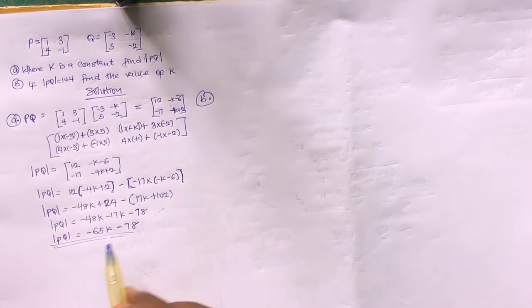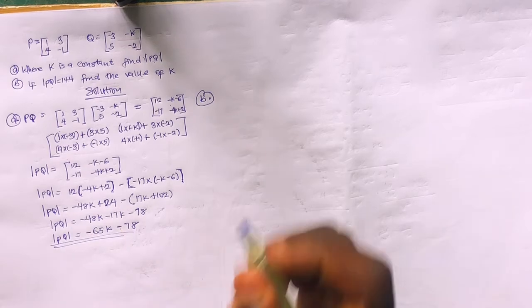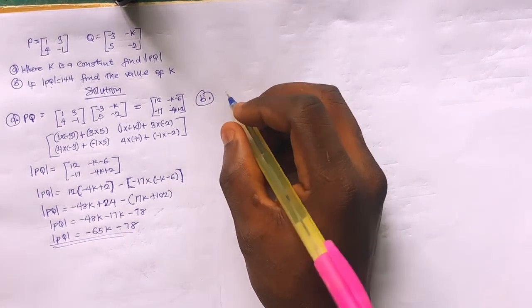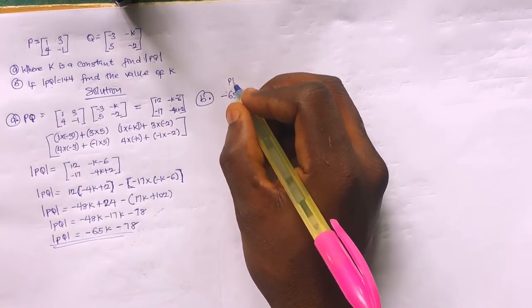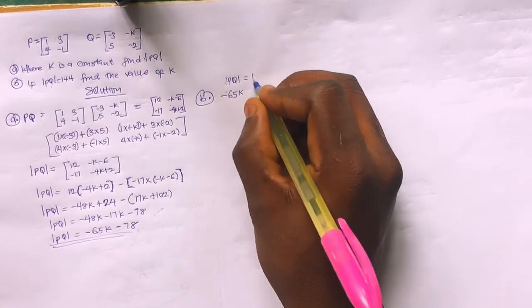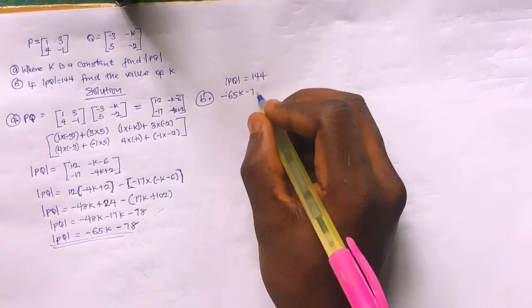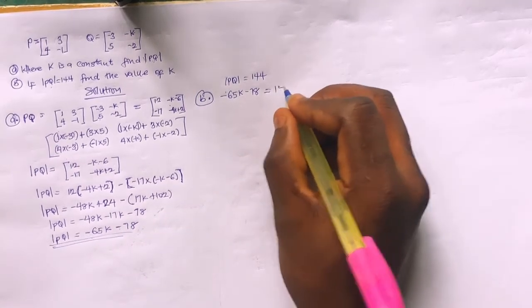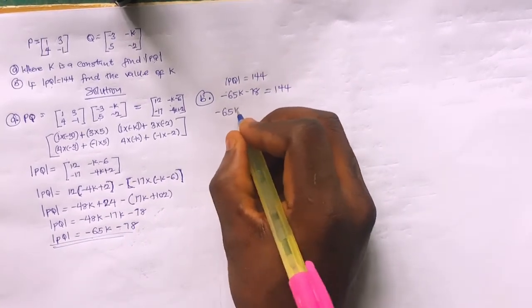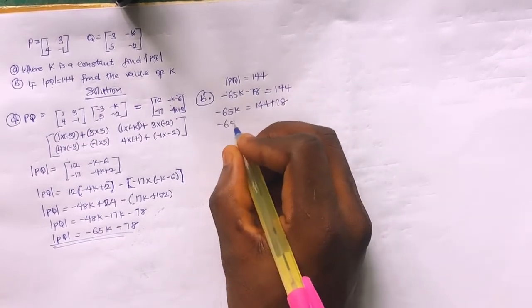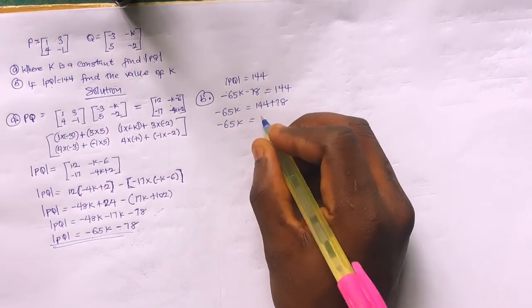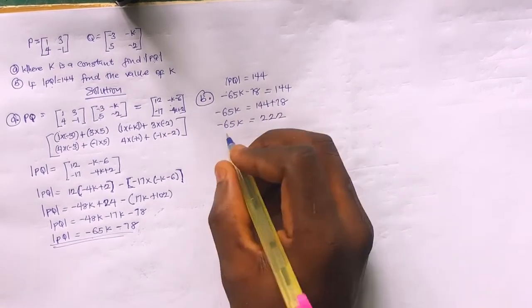Now moving to Question B: if the determinant of PQ equals 144, find the value of k. We set -65k minus 78 equal to 144. So -65k equals 144 plus 78, which is 222.